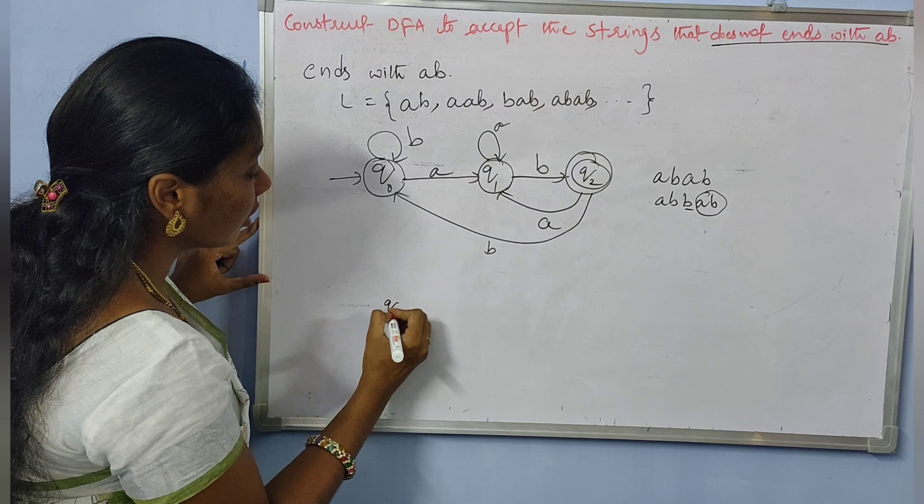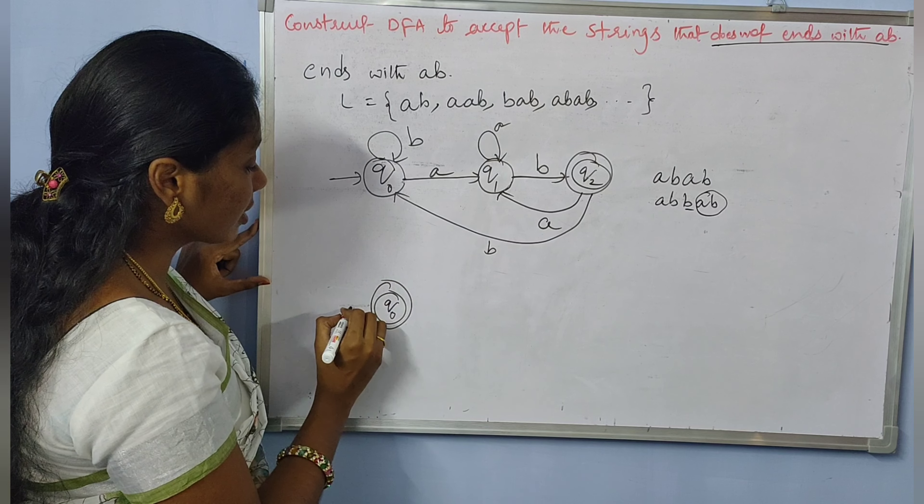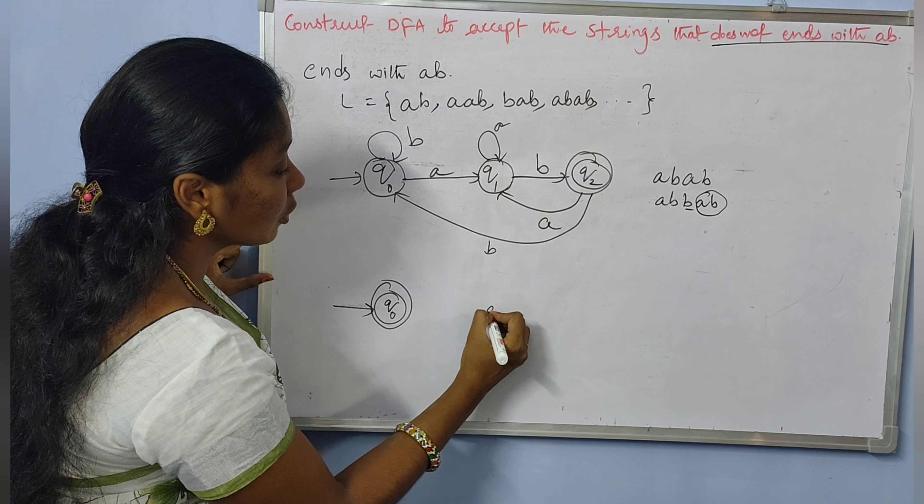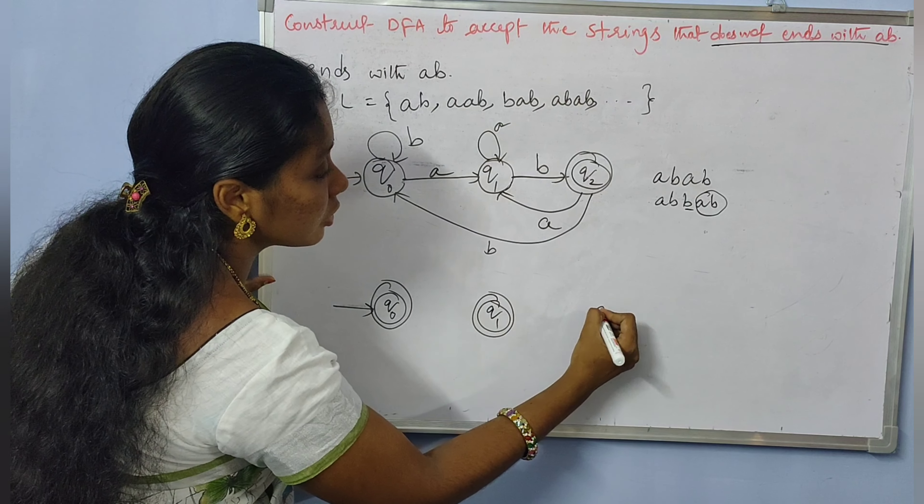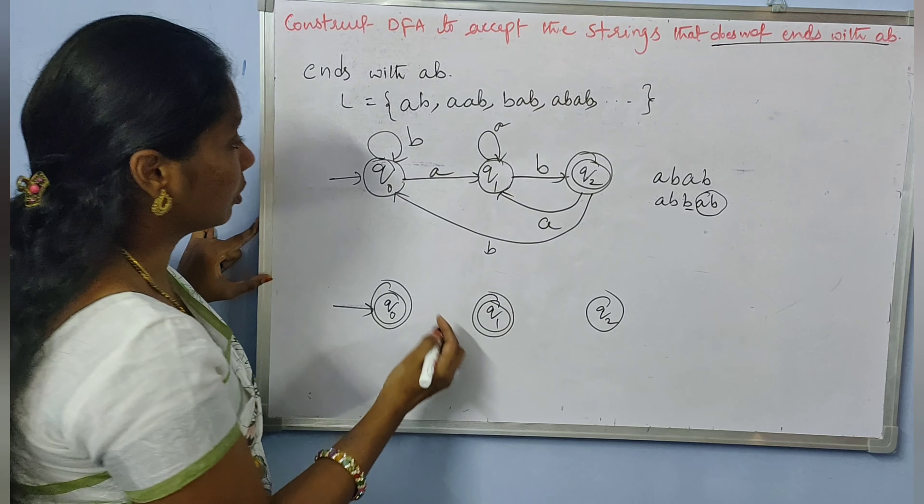So Q0, which was non-final, becomes final. Initial state remains as it is. Q1, which was non-final, becomes final. Q2, which was final state, becomes a normal state.